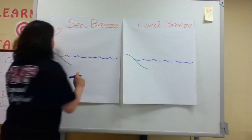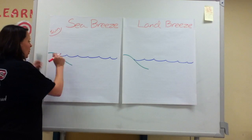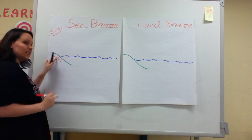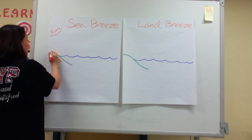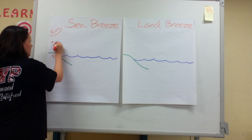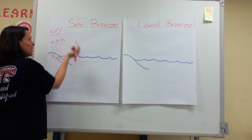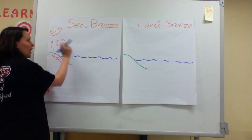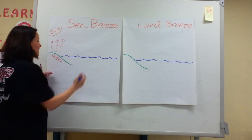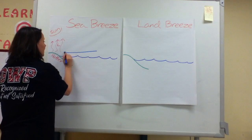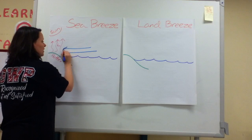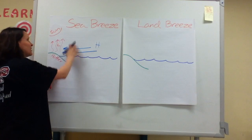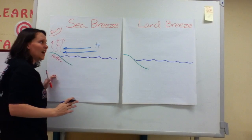During the day, the land gets hotter. Because of this, the air above the land gets heated and begins to rise. This creates what we call a low pressure system. With all the air rising, something's got to fill in the space, and that is the cool air from the ocean. This is a sea breeze, and it occurs during the day.